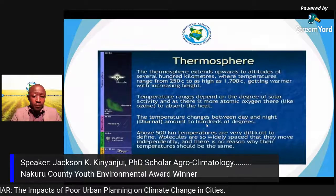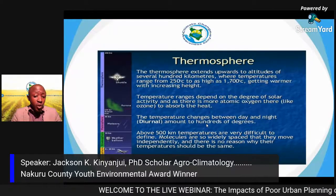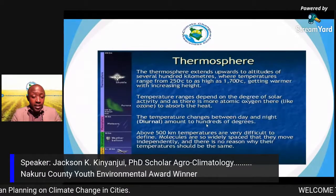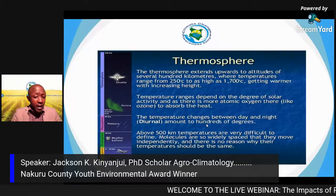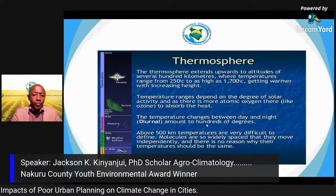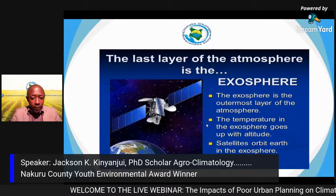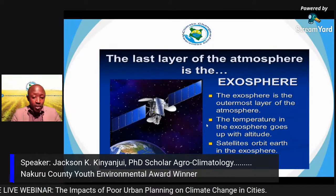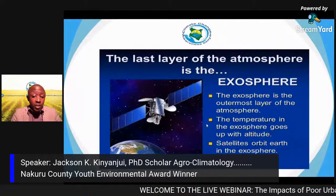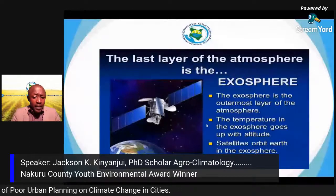The thermosphere extends upward to altitudes of several hundred kilometers. Temperatures depend on the degree of solar activity, and change between day and night. Temperatures increase with altitude — the same characteristic as the stratosphere. The exosphere is the fifth and outermost layer, where temperatures also increase with altitude, and satellites orbit in this space.